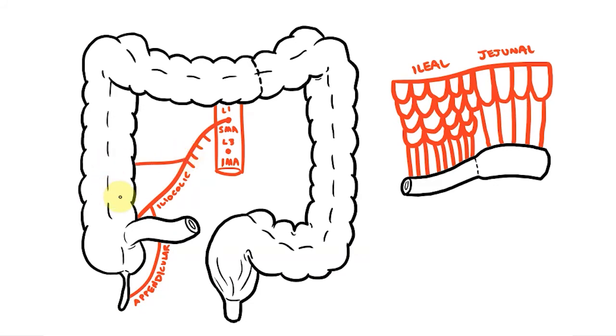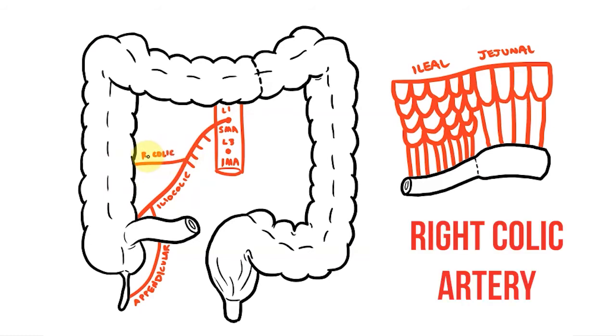Next there's an artery that passes to the ascending colon and this portion of bowel is on the right hand side of the body so we call this vessel the right colic artery.